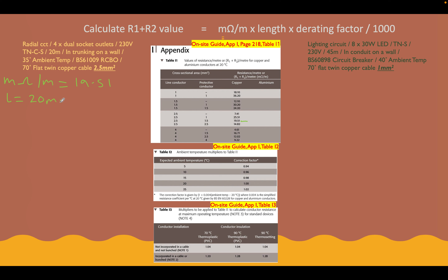The last value we need is our de-rating factor. Looking at the de-rating factor table, we go to conductor insulation — 70-degree thermoplastic cable. When it says 'incorporated in a cable or bunched,' it's referring to the protective conductor. We're using thermoplastic insulated cable, so the protective conductor is incorporated inside the cable. Our de-rating factor is therefore going to be 1.2.